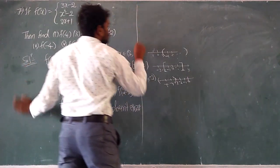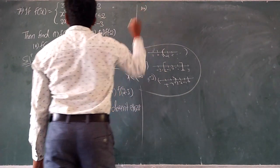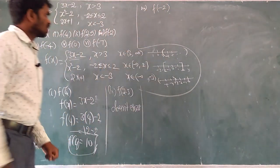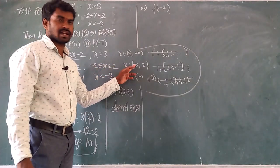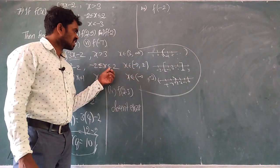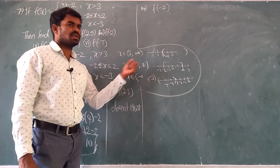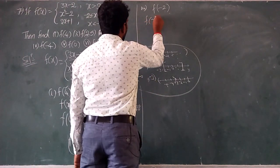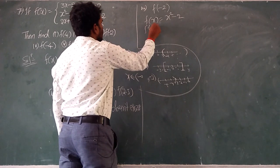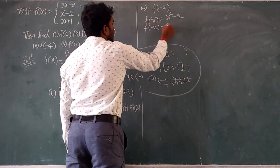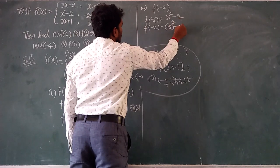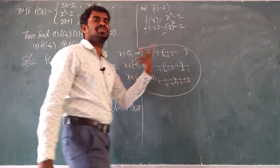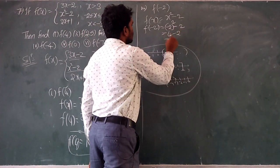Next, third one: f of minus 2. So this function is x squared minus 2.